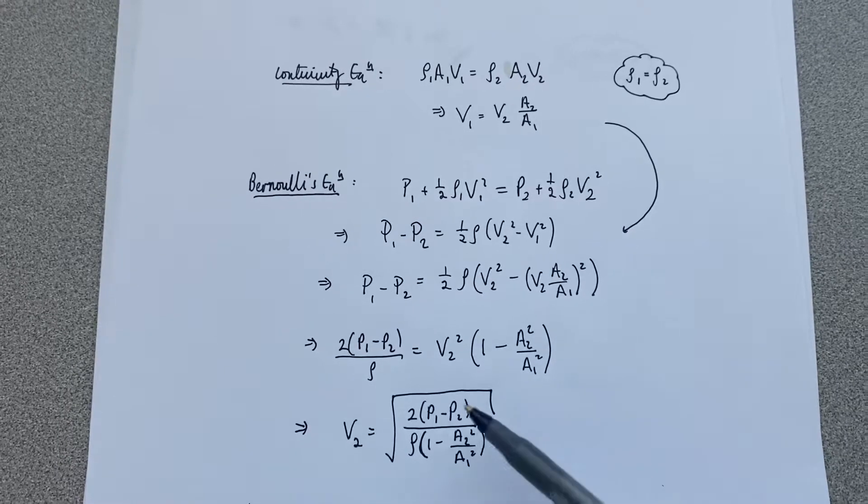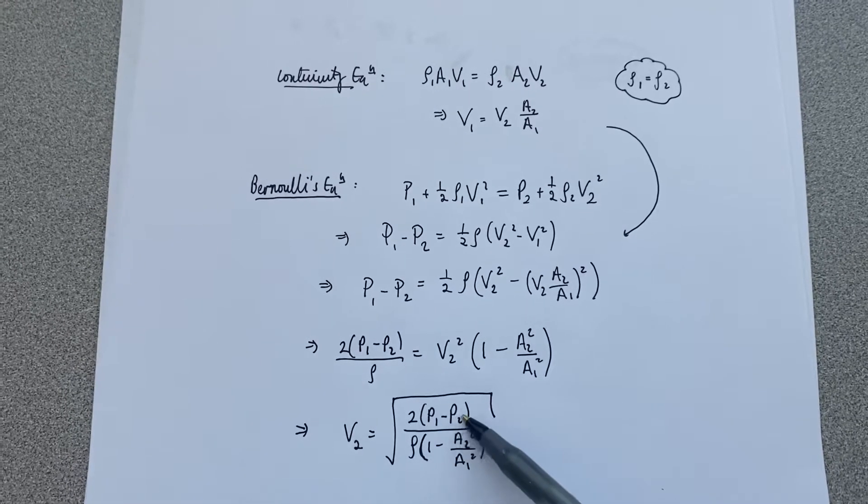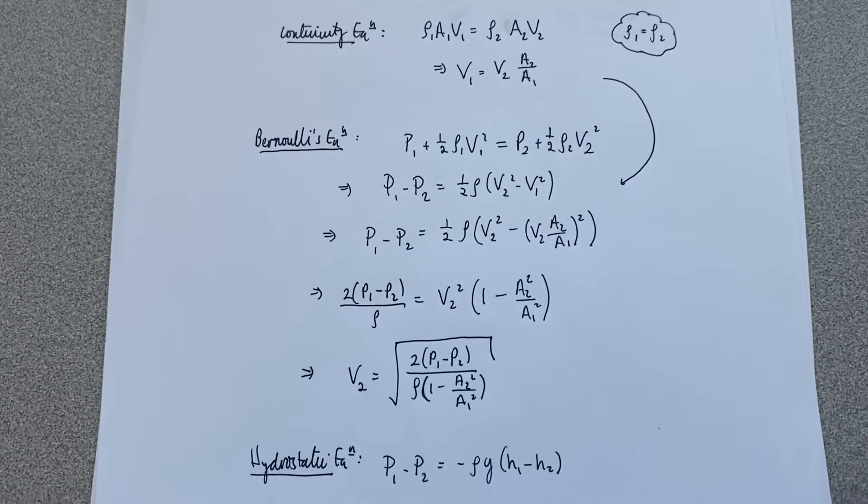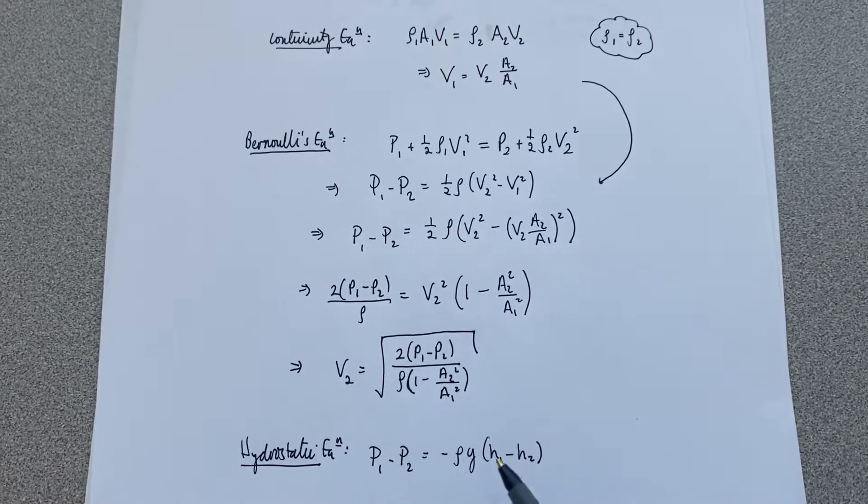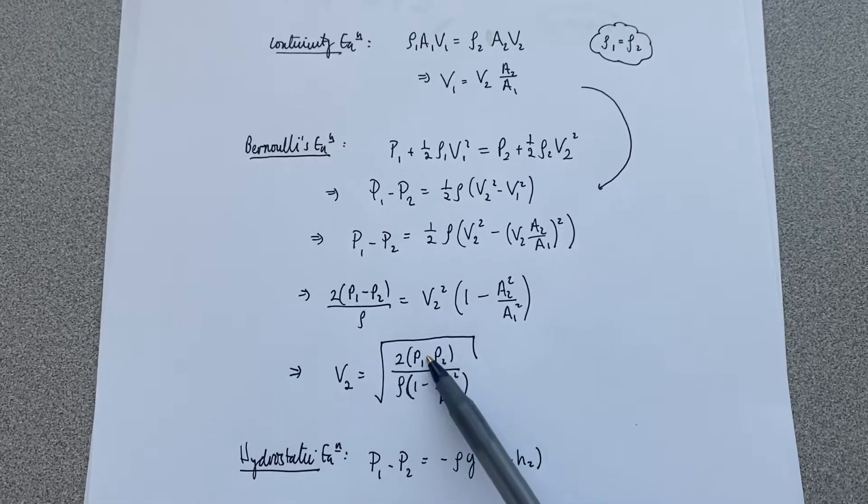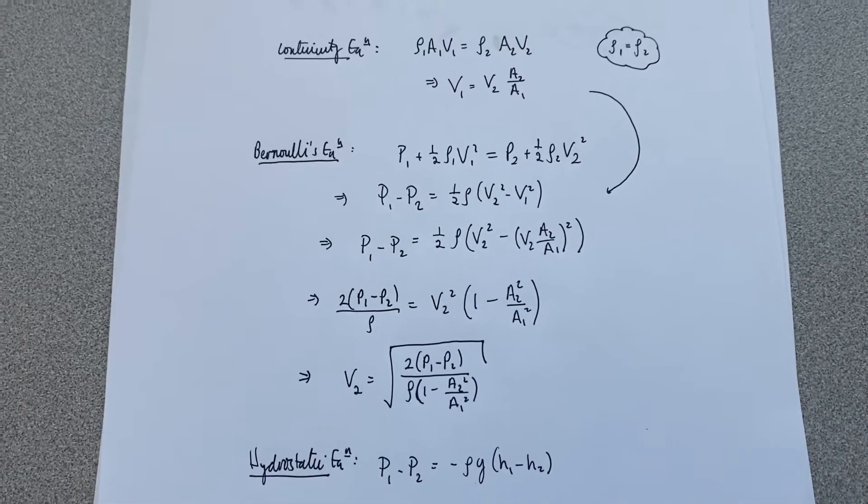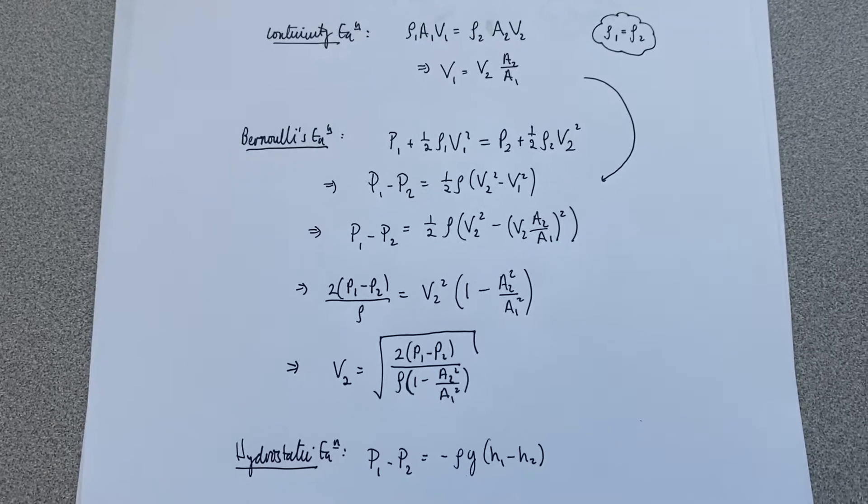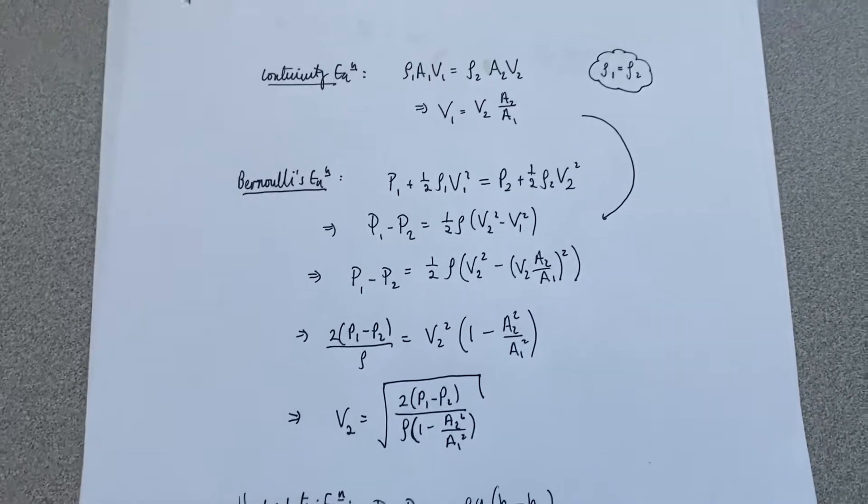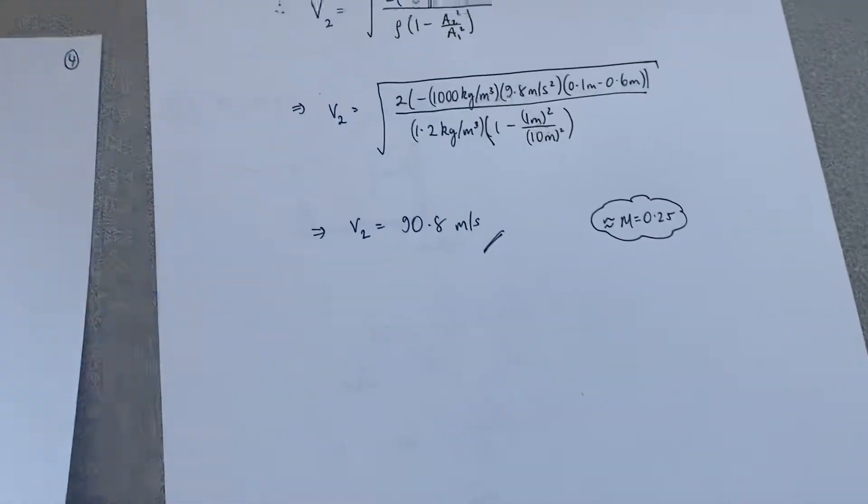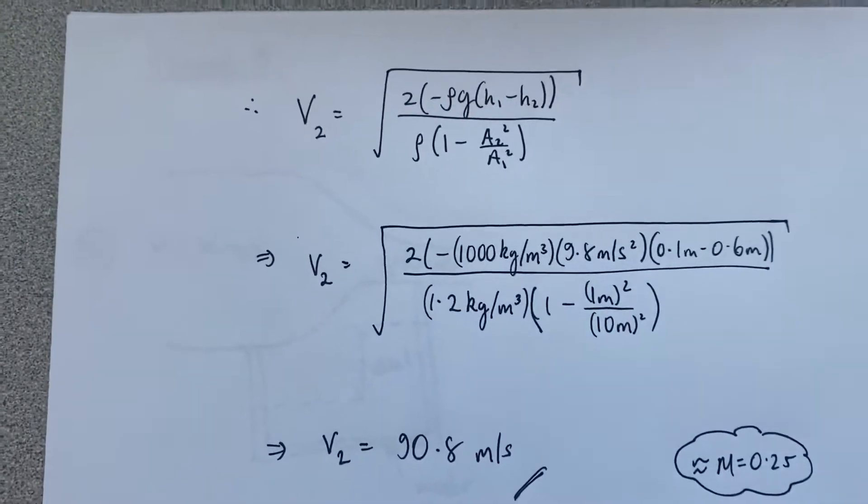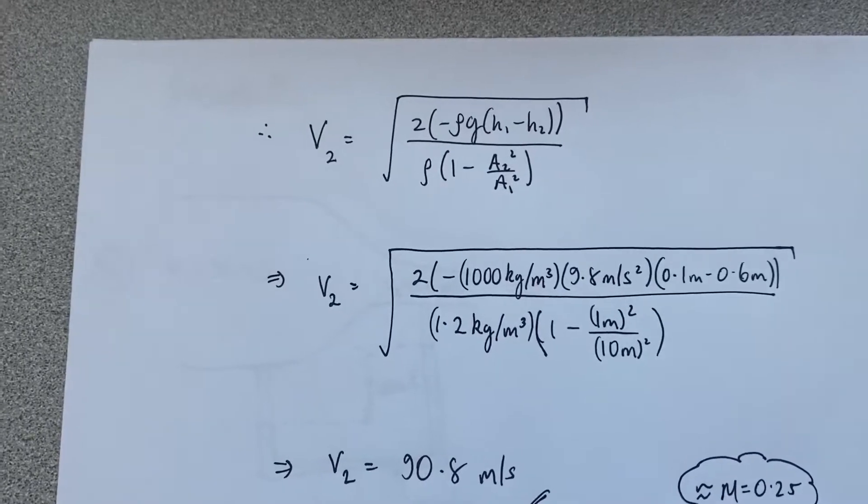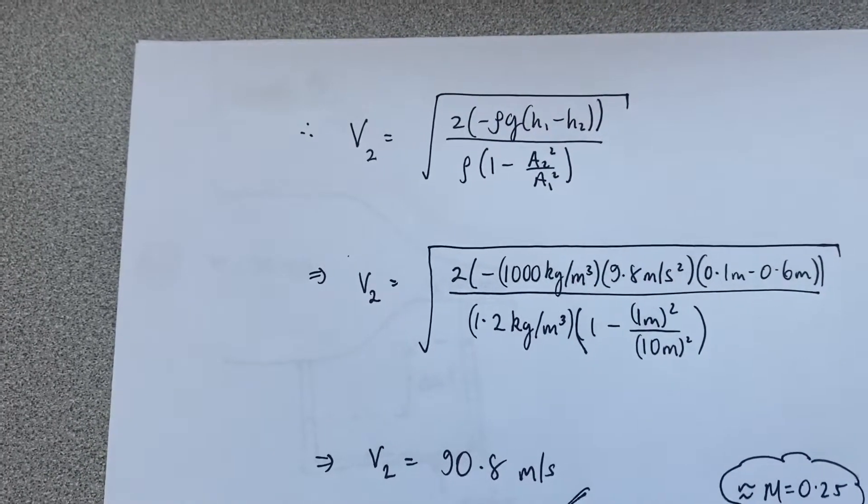Right, recalling of course we have this difference p1 minus p2, which is the left-hand side of the hydrostatic equation. So now I have an expression, if I replace this into here for v2 in terms of h1, h2, and a1 and a2.